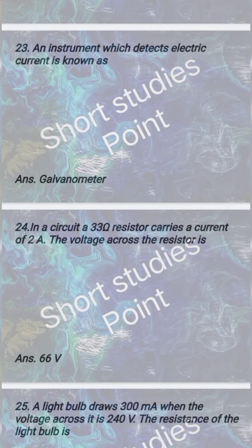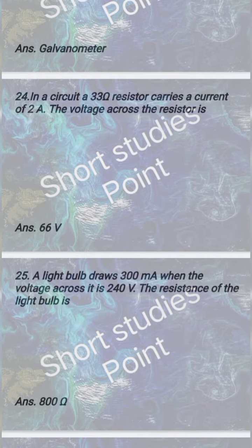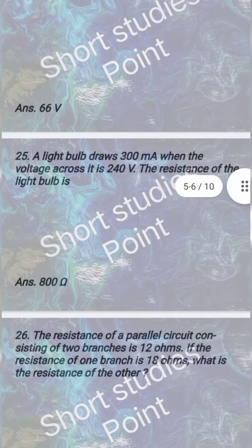Question 5: An instrument which detects electrical current is known as galvanometer. In a circuit, a 33 ohm resistor carries a current of 2 ampere. The voltage across the resistor is 66 volts.